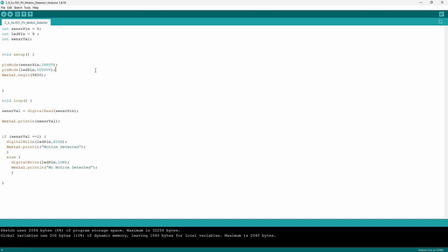In the void setup I'm going to make the sensor pin an input pin because I'm trying to receive data. I'm going to make the LED pin an output since I want to output the value of the sensor. I'm going to activate the serial monitor by using a baud rate of 9600.